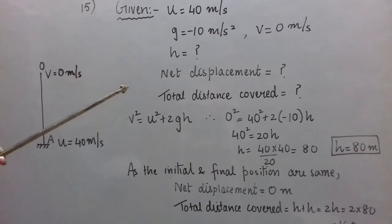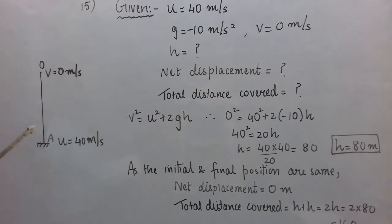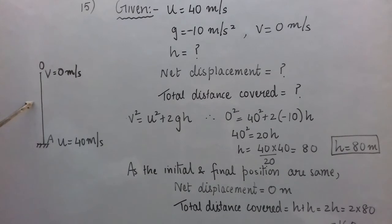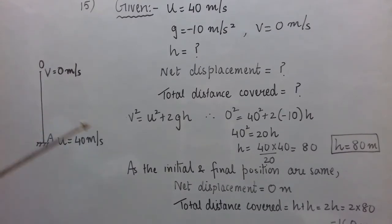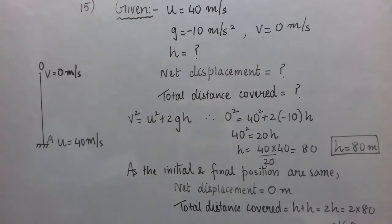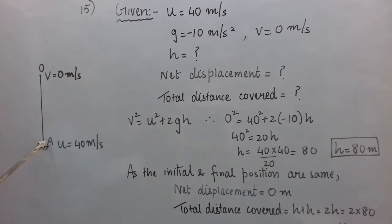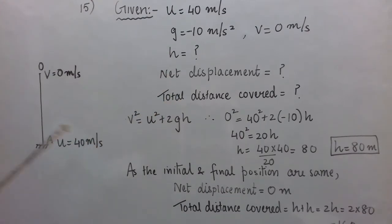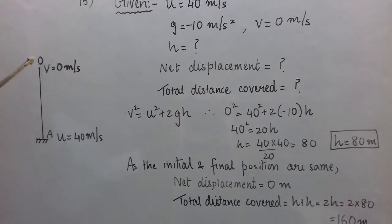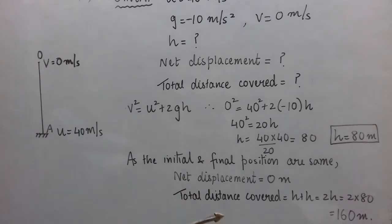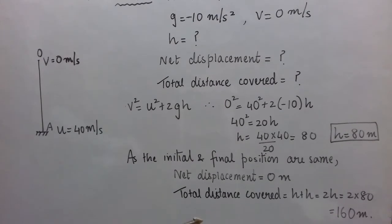Height is 80 meters. For net displacement: the stone is thrown from A, goes up to maximum height, then falls back along the same path to position A. Since the initial and final positions are the same, net displacement is 0 meters. Total distance covered is h going up plus h coming down, that is 2h equals 2 × 80 equals 160 meters.